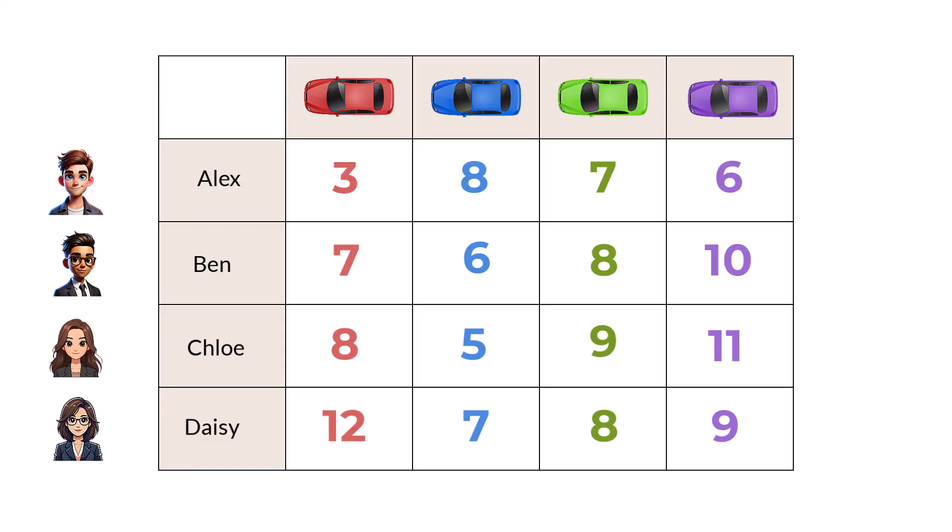In the absence of the Hungarian algorithm, we could just start allocating car one to Alex. However, Ben and Chloe would both want car two. If Ben gets car two, then Chloe's next choice would have been car one, but that's already been allocated to Alex. So, we could allocate Chloe to car three. But Daisy would prefer car three, and so, we have a problem. There are 24 different ways we can perform these allocations in our quest for the total minimum time. That's not too onerous. If we had ten riders, though, there would be more than a million permutations. So, we need a process or algorithm to solve the problem more efficiently.